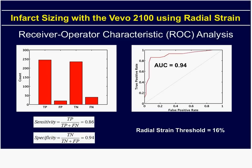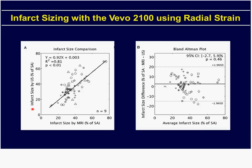We applied a receiver-operator characteristic (ROC) analysis to determine the threshold at which radial strain detects the presence of infarction. We tested various thresholds and got the best area under the curve at a radial strain threshold of 16%. The sensitivity is 0.86, and specificity is 0.94 — pretty hard to beat. Looking at infarct size using this 16% threshold, comparing ultrasound to MRI gives not a bad correlation — R-squared of 0.81 — and the Bland-Altman is pretty level too.